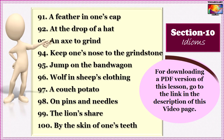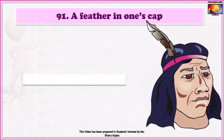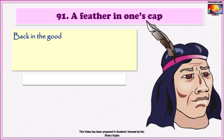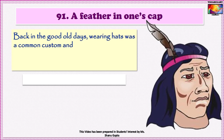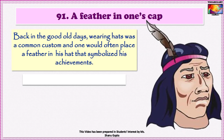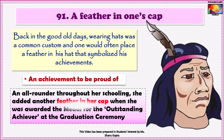Coming to our final section of 10 idioms. Idiom No. 91 is 'A feather in one's cap.' Back in the old days, wearing hats was a common custom and one would often place a feather in one's hat that symbolized one's achievements — probably the children's rhyme 'Yankee Doodle' is the best known use of this phrase. The idiom means an achievement to be proud of. An example: 'An all-rounder throughout her schooling, she added another feather in her cap when she was awarded the medal for outstanding achiever at the graduation ceremony.'